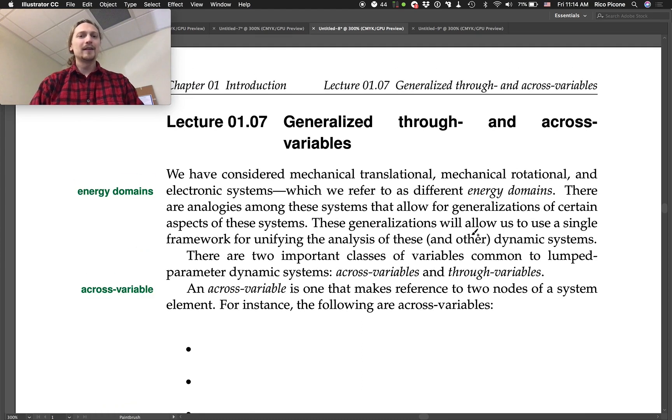In lecture 1.7, we're going to introduce a generalization of variables, and then in lecture 1.8, we're going to introduce a generalization of elements. We've been considering, we've been talking about how maybe this element's like that element. We're going to do that explicitly today in lecture 1.8. But before we get there, we're going to actually generalize the variables first.